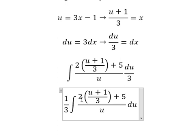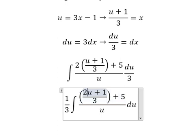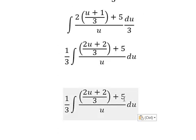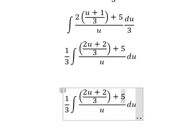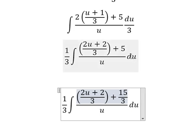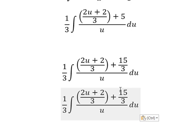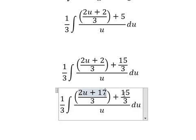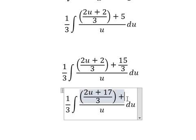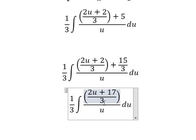This numerator, number two multiplied by u plus 2 gives us 2u plus 2. Then we can do common denominator: 2u plus 2 over 3 plus 15 over 3 equals 2u plus 17 over 3. So we have one-third times the integral of 2u plus 17 over 3, all over u, du. That simplifies to one-ninth integral of 2u plus 17 over u du.